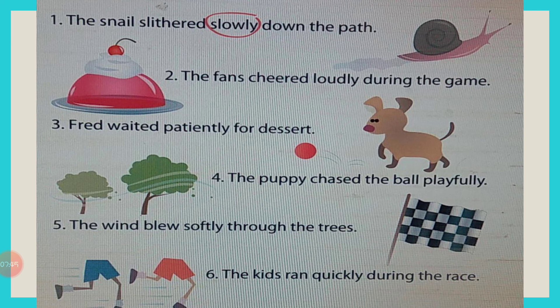Now sentence number five: The wind blew softly through the trees. How did the wind blow through the trees? The wind blew softly. Softly is an adverb — it describes how the wind blows. Now sentence number six: The kids ran quickly during the race. Kids is a plural noun. What did the kids do? They ran. How did they run? They ran quickly. Quickly is an adverb describing the way of running.